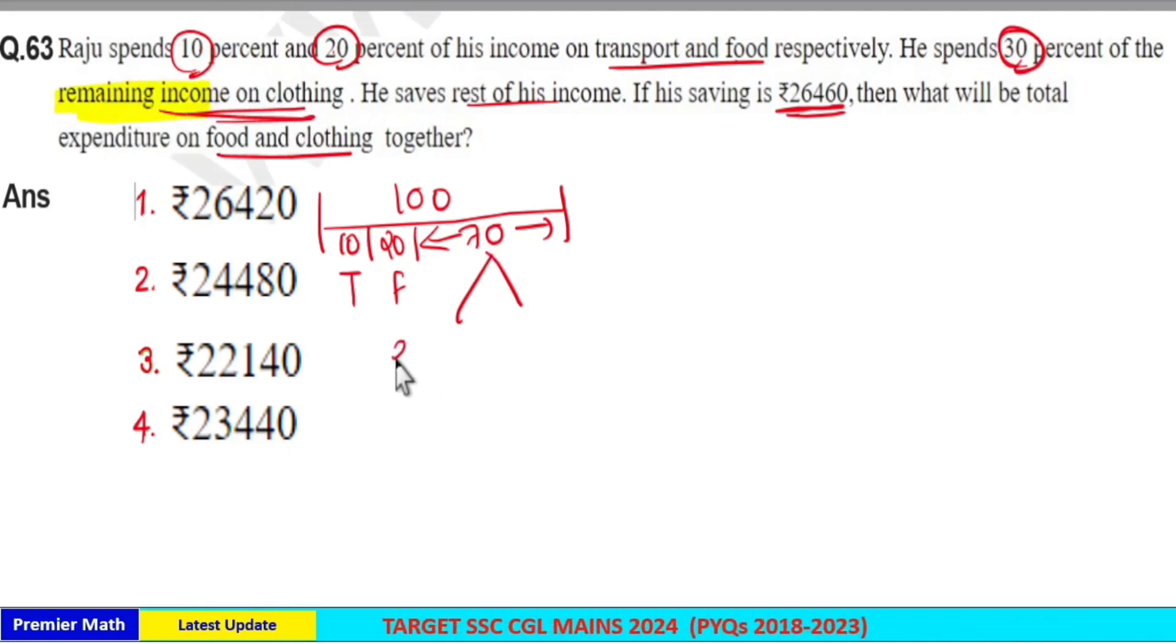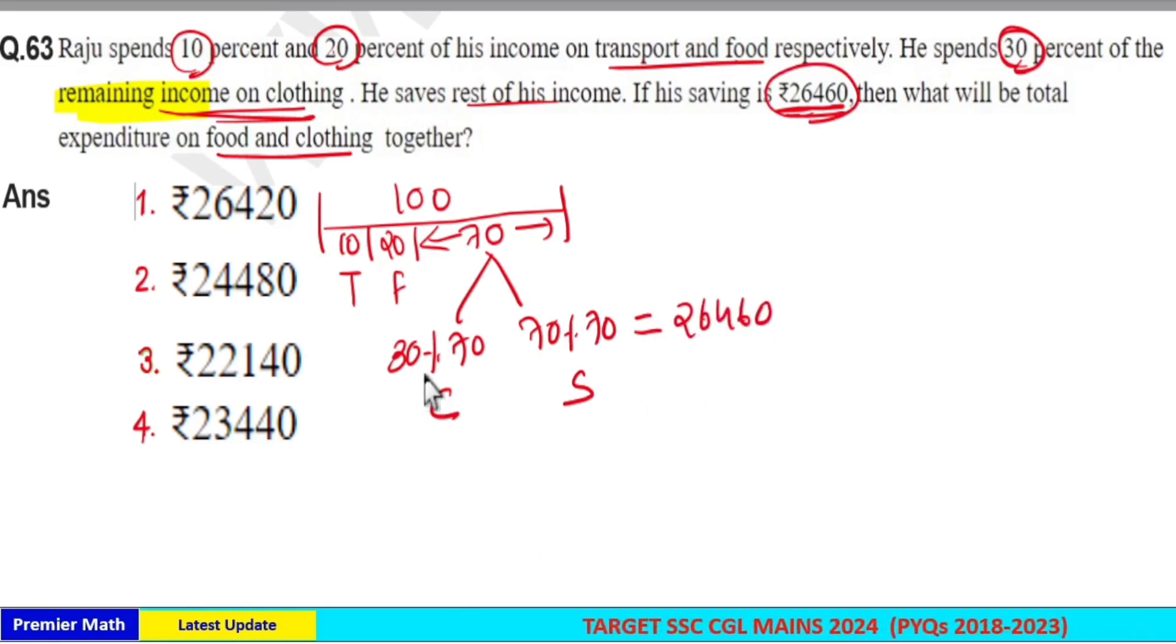30% of remaining income 70 he spent on clothing. Remaining is 70% of 70, so 70% of 70 is the savings here which is given as 26,460 in the question. Percentage and double zero cancel, seven into seven, 49 rupees is equal to 26,460.